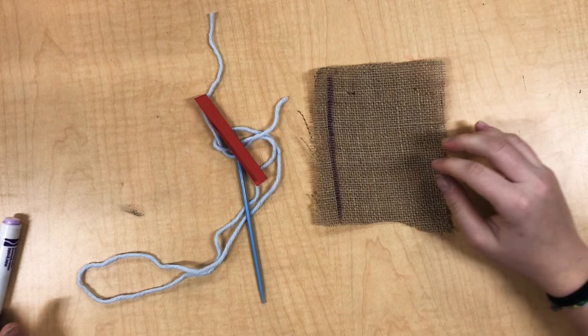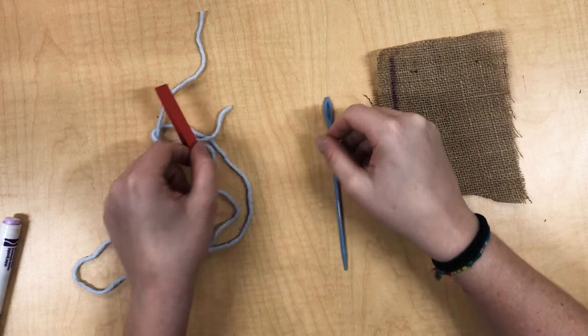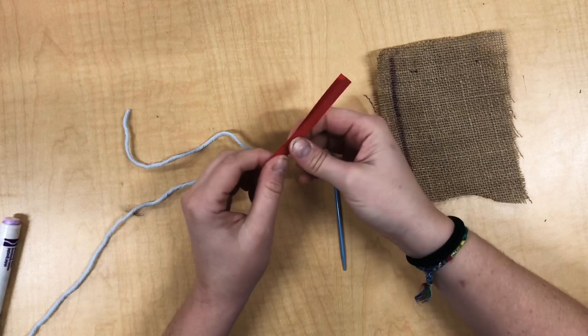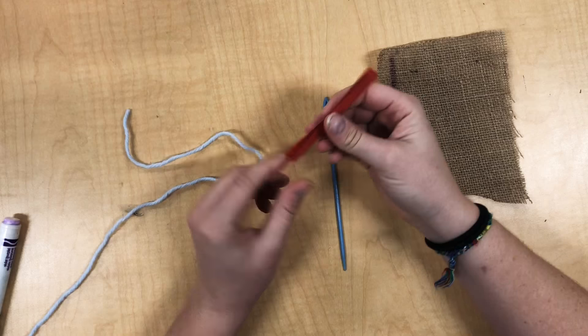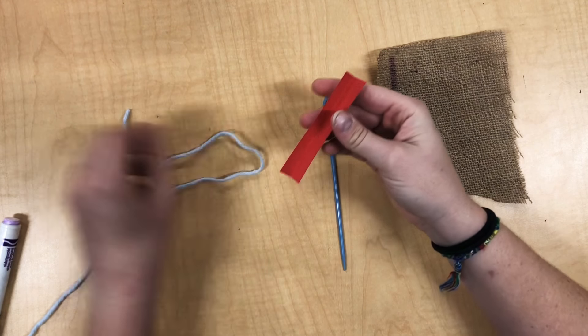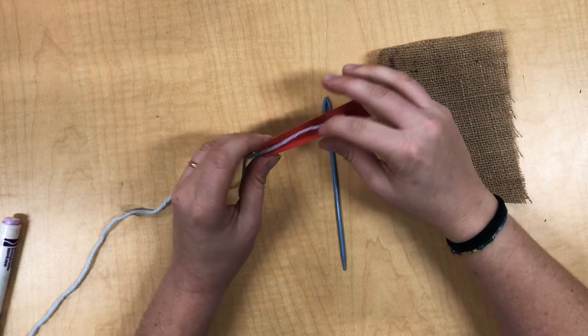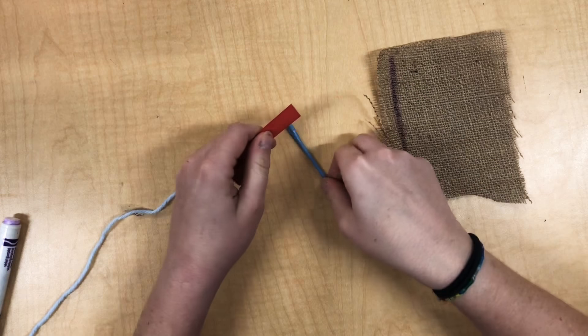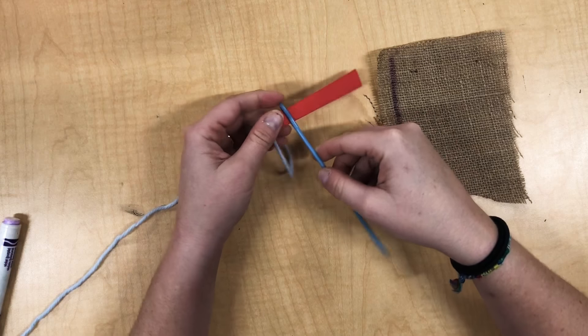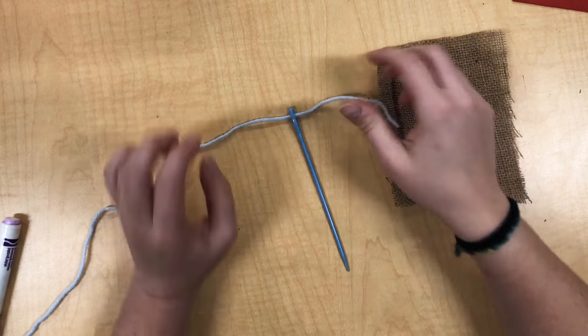Then we're gonna get ready to thread our needle. So to thread our needle, first you'll need a needle, you'll need a piece of string, and you'll need one of these little hot dog buns. This is gonna be your needle threader. So to thread your needle, you're gonna take the string, put it inside this little hot dog bun, then stick the hot dog bun through the needle. Then I pull it off, I've threaded my needle.